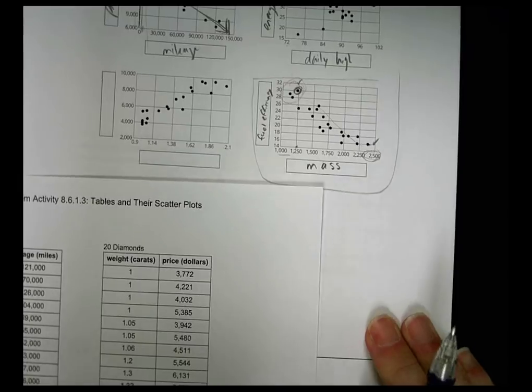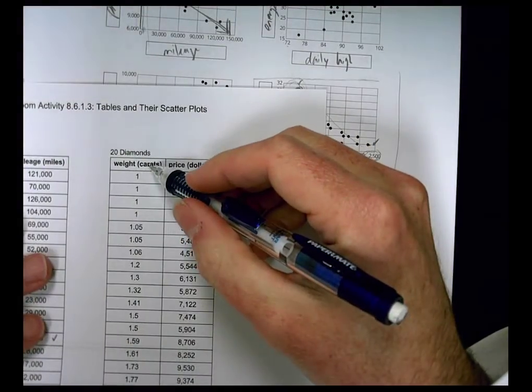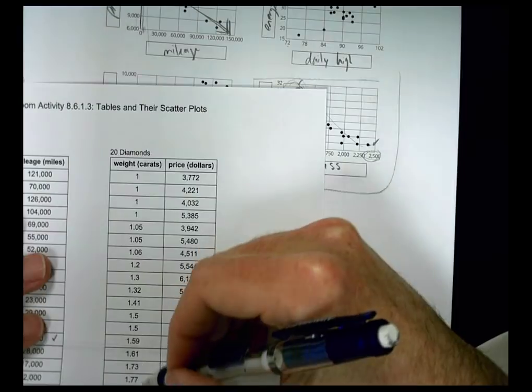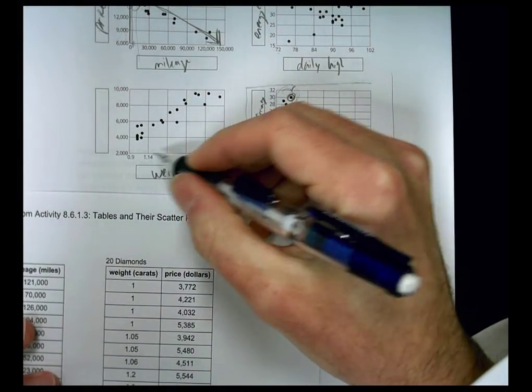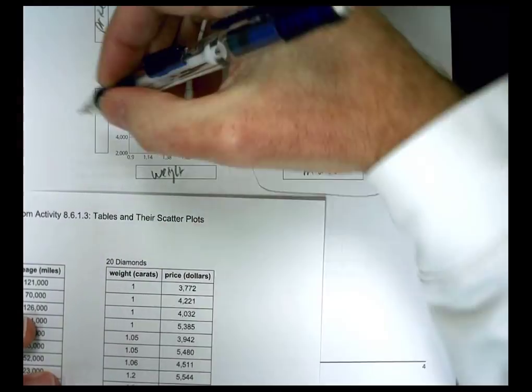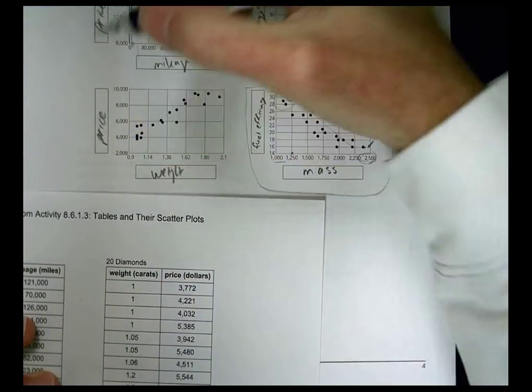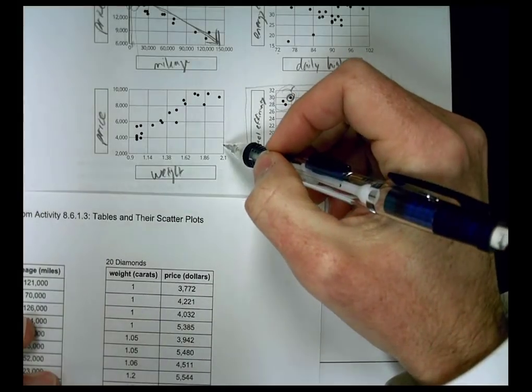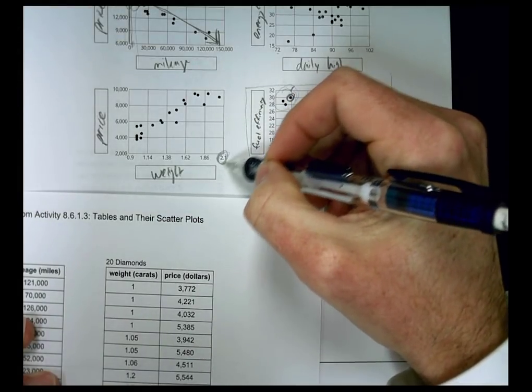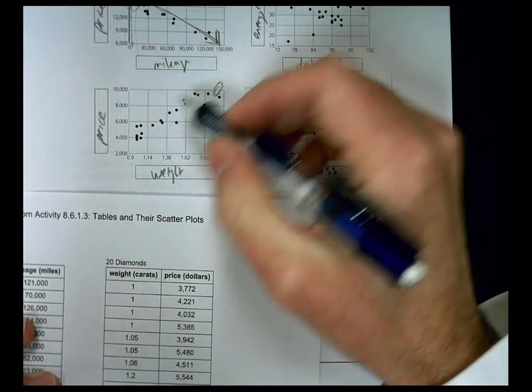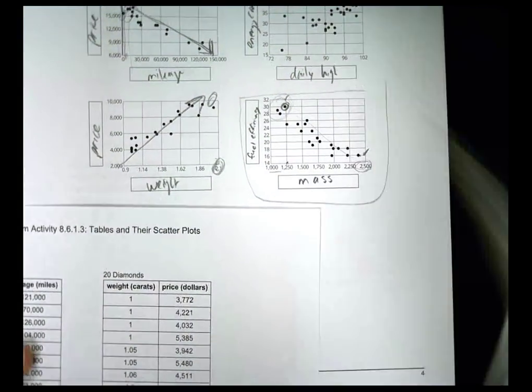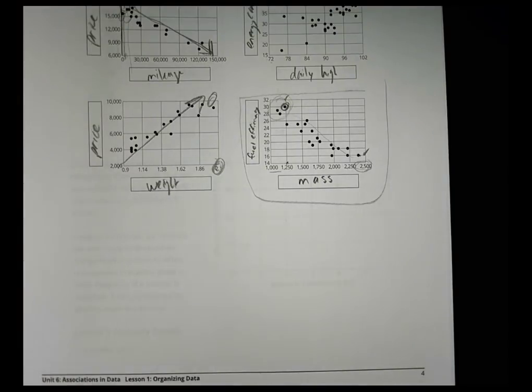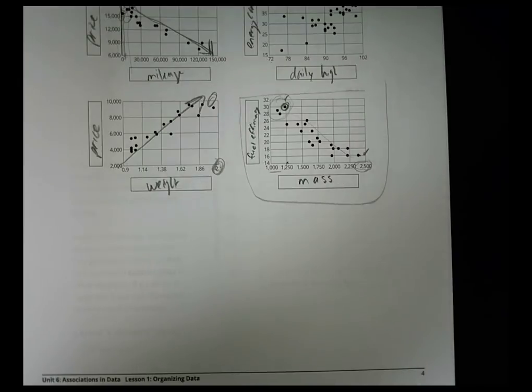Our last one goes with this one here. We have the weight of a diamond from 1, 1.5, 2.04. This will be our weight down here because of the numbers available in X, and our price goes there. What we can learn is the greater the weight, the higher the price. Price tends to go up as the weight of the diamond increases. That's what you can see with that scatter plot - pretty nice to look at and kind of cool things to learn about.